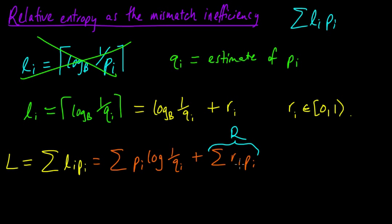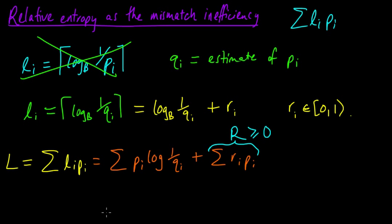Let's call the rounding term R, for rounding inefficiency — some inefficiency due to rounding up. This is always going to be non-negative because all the R_i's are non-negative and all the P_i's are non-negative.